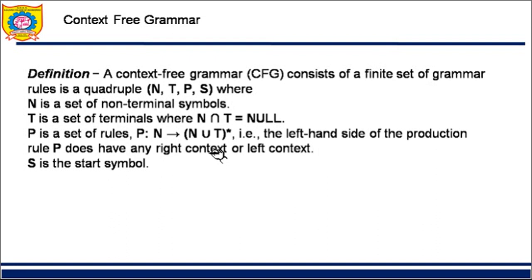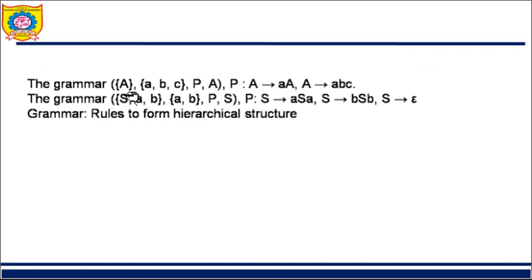These production rules are applied for splitting the sentence into appropriate syntactic form for analysis. I can say grammar is a quadruple. CFG is used to check if a sentence is syntactically correct. S is our start symbol. Grammar rules are shown in a hierarchical format. Here, capital A is the start symbol; these are the terminals; P is the set of production rules and A is the start symbol.